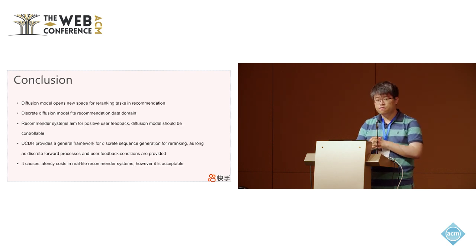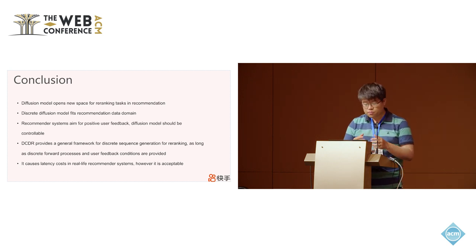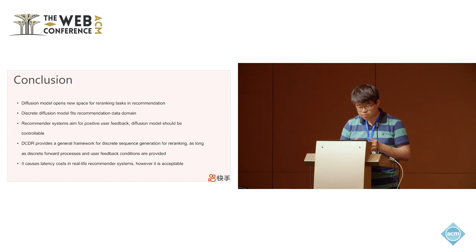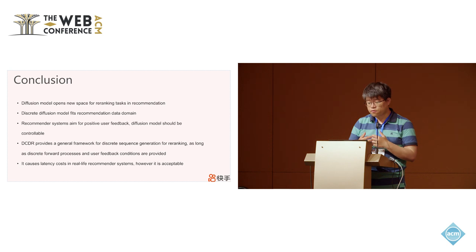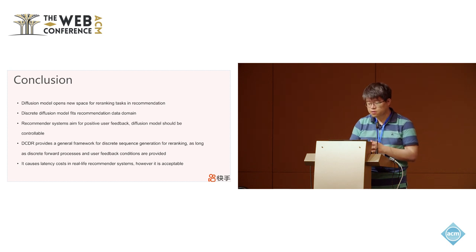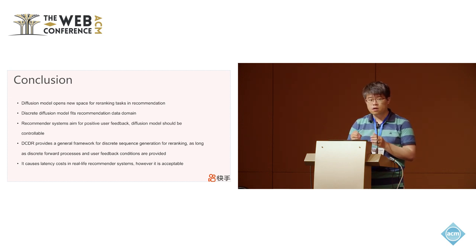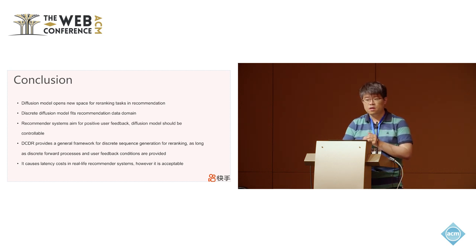In conclusion, diffusion models open a new space for re-ranking tasks in recommendation. Discrete diffusion models fit the recommendation data domain since most recommendation data consists of IDs rather than natural language. The system always aims for positive user feedback, so the model should be controllable — we provide a way to inject user feedback into the generation process. DCDR serves as a general framework for discrete sequence generation, as long as the forward process is Markovian and user feedback conditions are provided. Finally, while it does cause latency costs in real-life systems, this is acceptable when it brings sufficient online improvements.